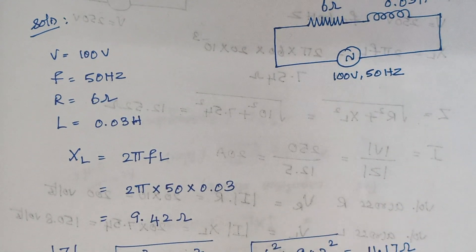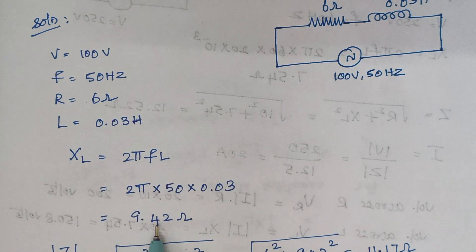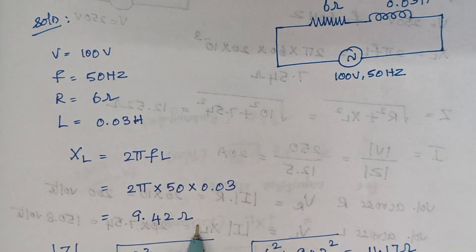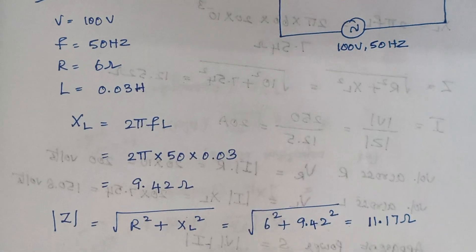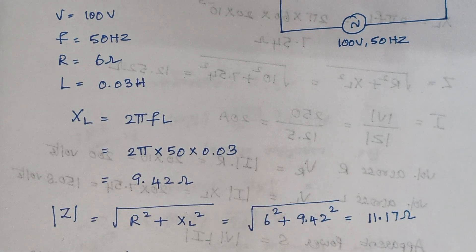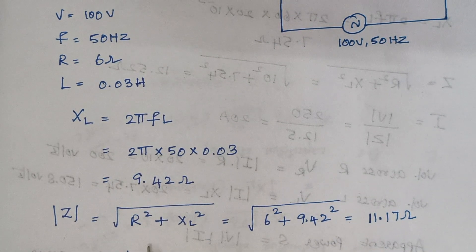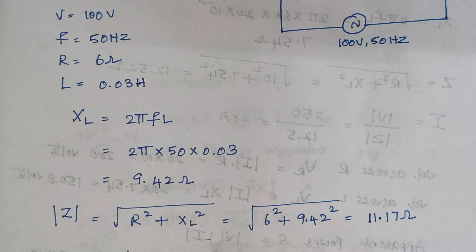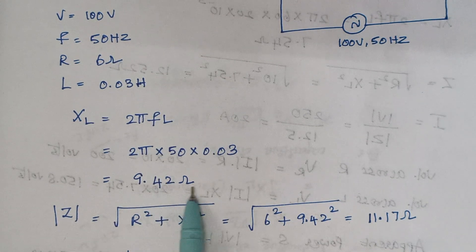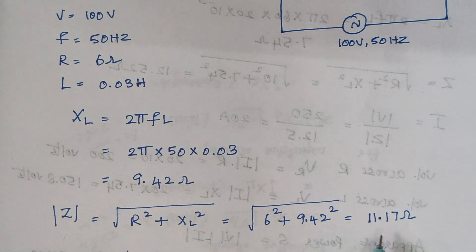When you substitute those values, the answer is 9.42 ohms. Next we are going to calculate the impedance. Impedance is given as the square root of R² plus XL². We know the R value and we know the XL value, so just substitute and calculate Z.